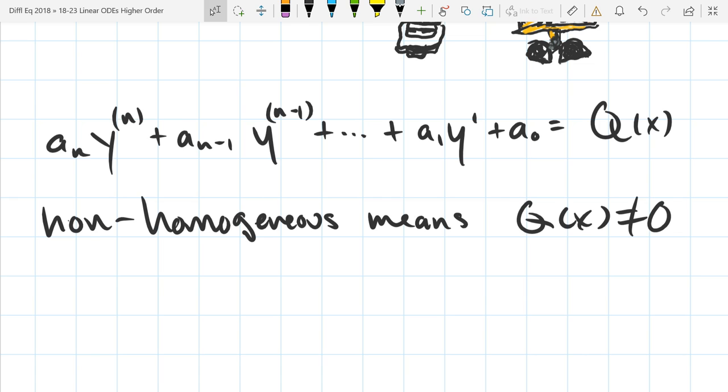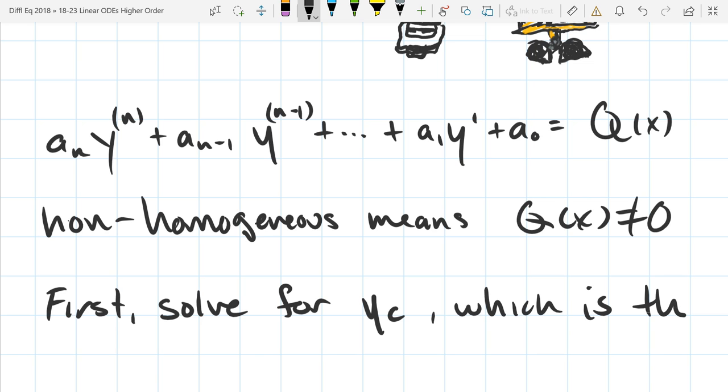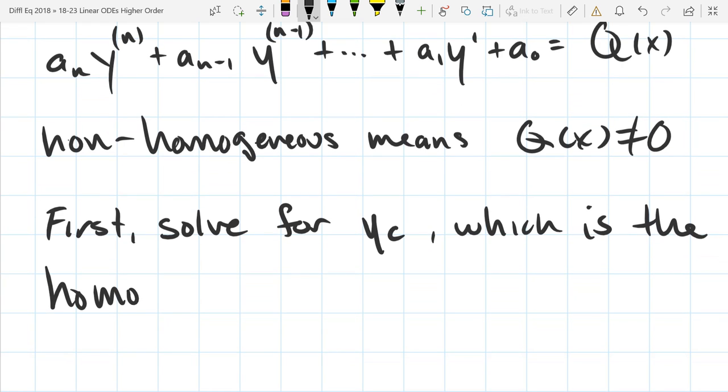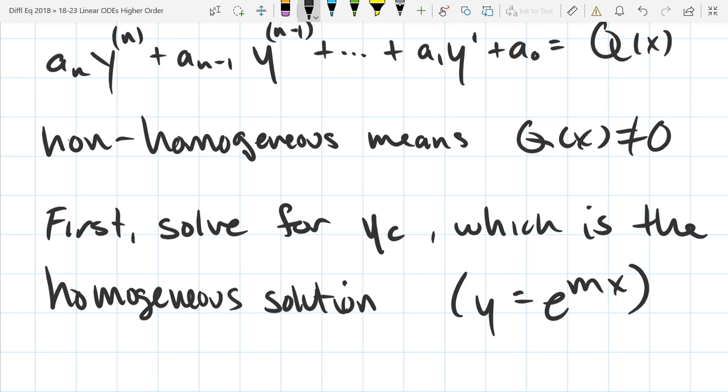So the first thing you're going to do is solve for YC, which is the homogeneous solution. We do that the same way we did before. We set Y equal E to the MX, plug it in, and then you've got your polynomial. Factor that out and write down all your M values. We went through a whole couple days on repeated real values or complex conjugates and all that good stuff.